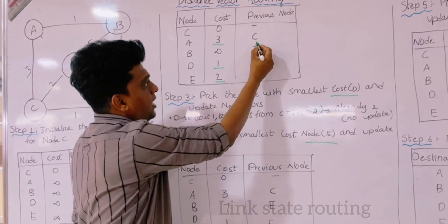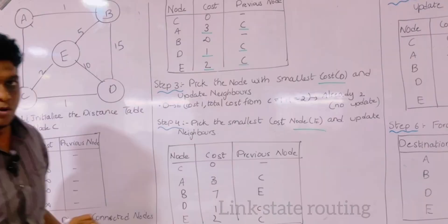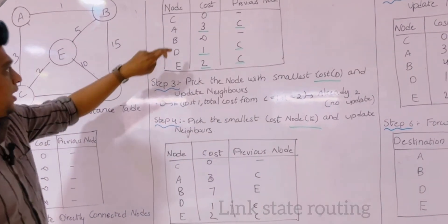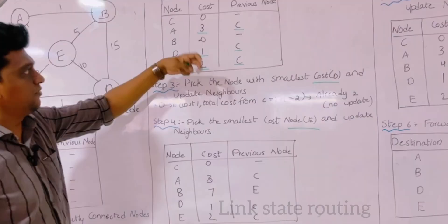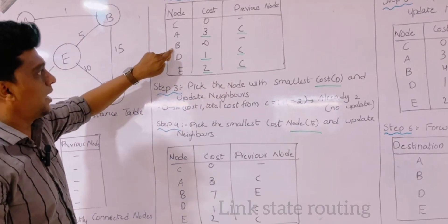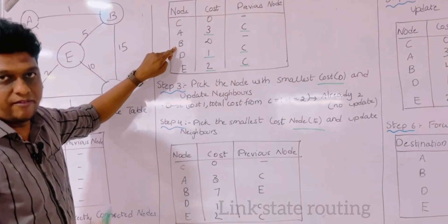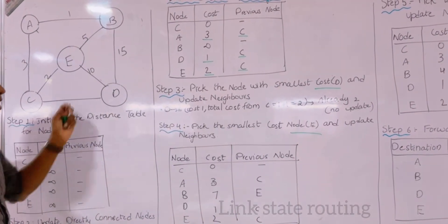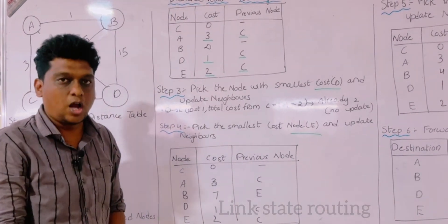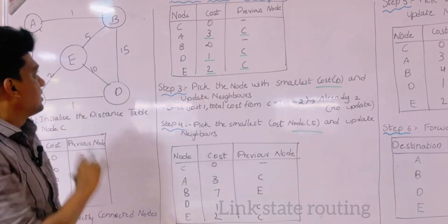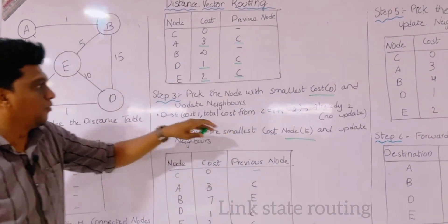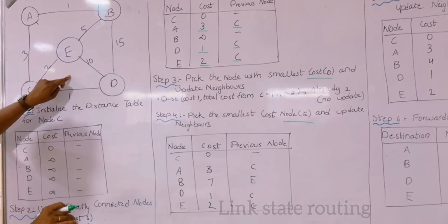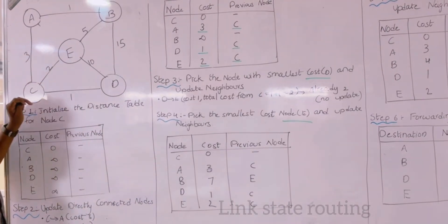The previous node has been marked as C, C, and C — because we are calculating from C only. The remaining node we haven't identified is B. Node B still hasn't been identified because it is not directly connected to C; it is far away from C. So we have to identify which is the shortest path from C to B. Now we have to pick the node with the smallest cost.